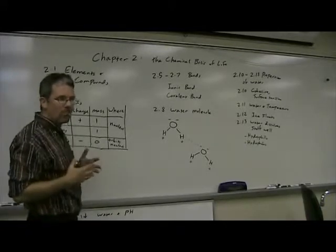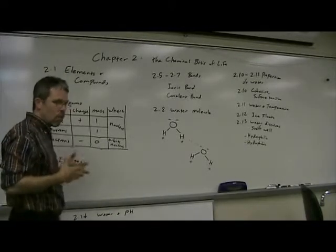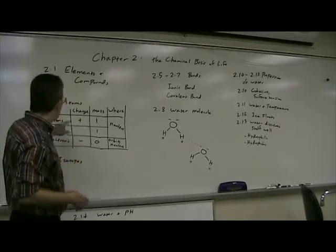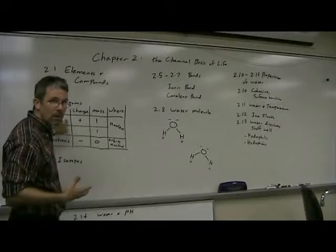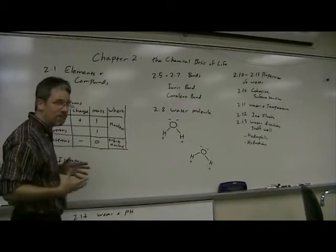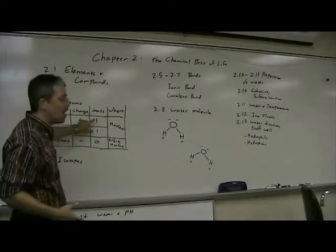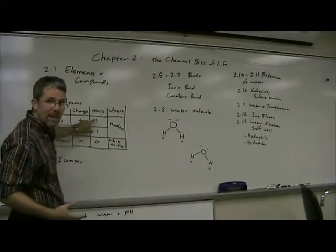The atomic number of an element, such as carbon or hydrogen or whatever, is the number of protons that the atoms have. All elements have their own atomic number. The atomic mass is the number of protons and neutrons that the element has.